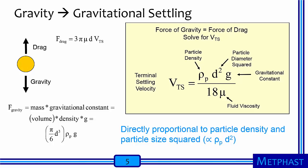Does this make sense? Every time you see an equation, you should be able to look at the proportionality of it and ask yourself, do these things make sense? In this case, yeah, sure, it makes sense. A less dense particle will settle slower than a more dense one. It also says that a larger particle will settle a lot faster than a smaller one, because terminal settling velocity is proportional to particle diameter squared.